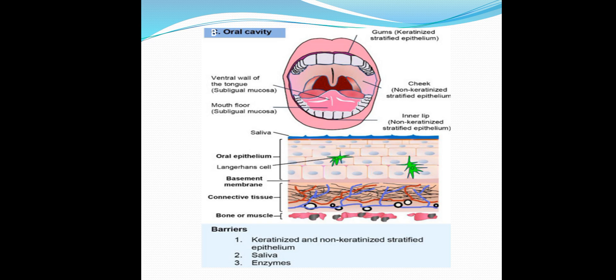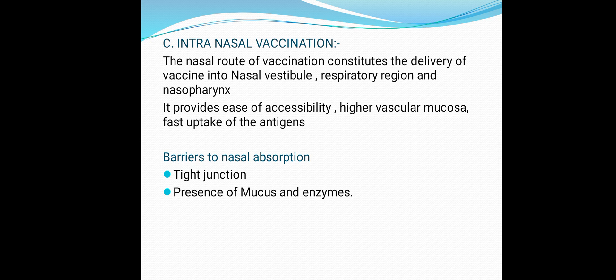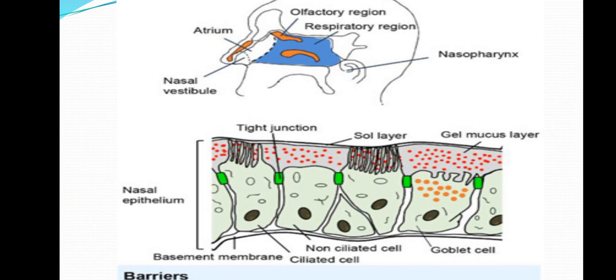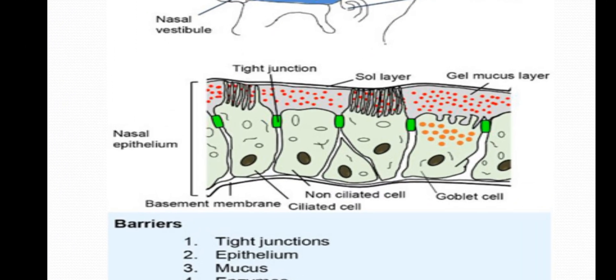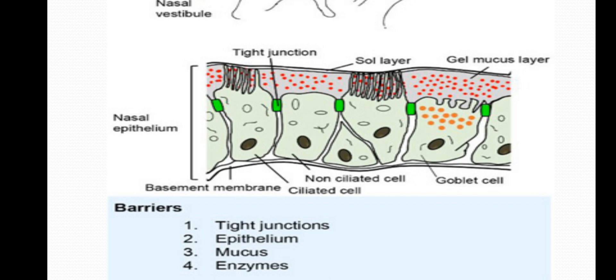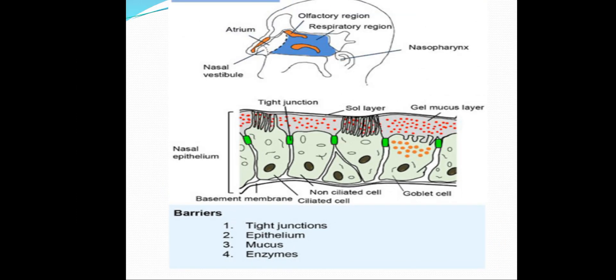Next is intranasal vaccination. The intranasal route constitutes delivery of vaccines through the nasal vestibule, nasal cavity, respiratory regions, and nasal pharynx. It provides ease of accessibility and higher vascular mucosa for faster uptake of antigens. The barriers to nasal absorption are tight junctions, presence of mucus, and enzymes. Inside the nose, layers include the nasal epithelium and basement membrane, with barriers being tight junctions, epithelium, mucus, and enzymes.